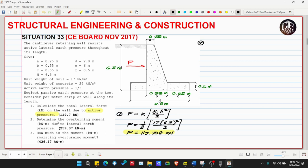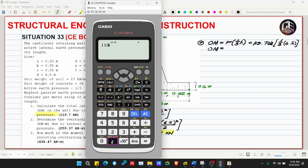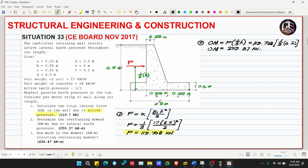Number two: determine the overturning moment in kilonewton meters due to lateral earth pressure. This lateral earth pressure has its center at one-third of the overall height. From this point, P will rotate clockwise. The overturning moment OM equals P multiplied by one-third of h, so 119.708 times one-third of 6.5, which equals 259.37 kilonewton meters.